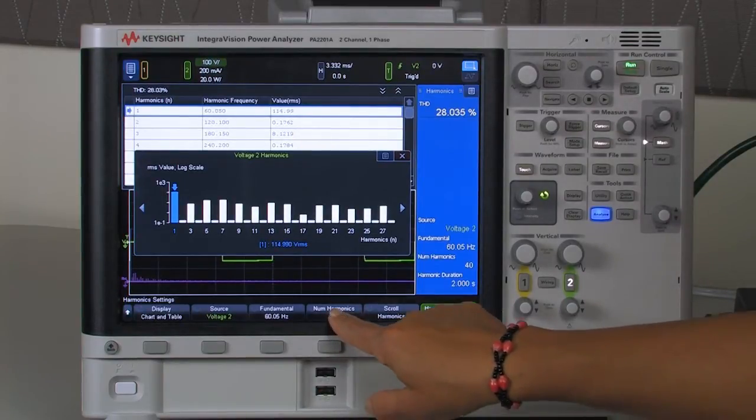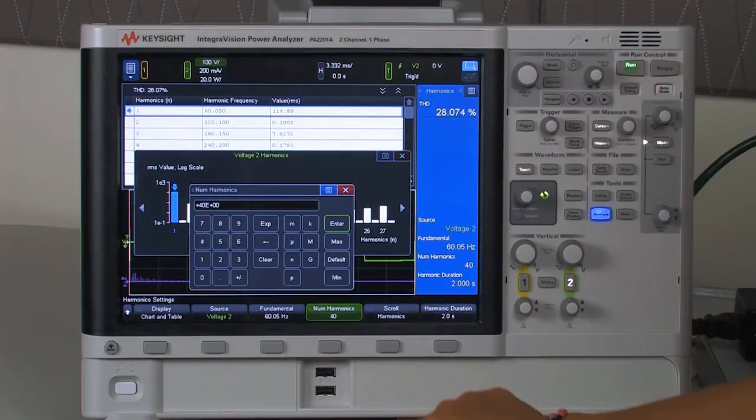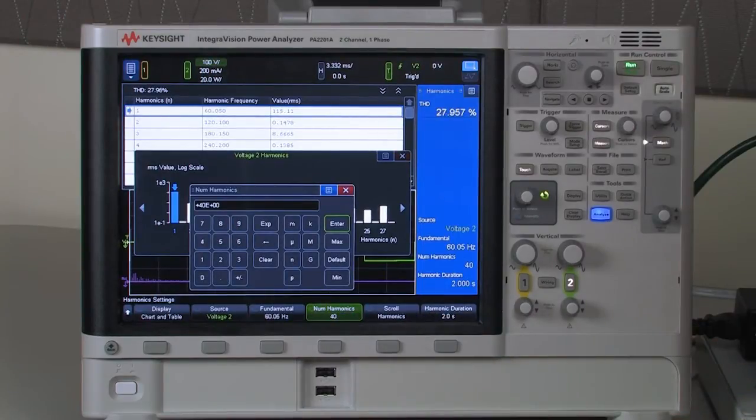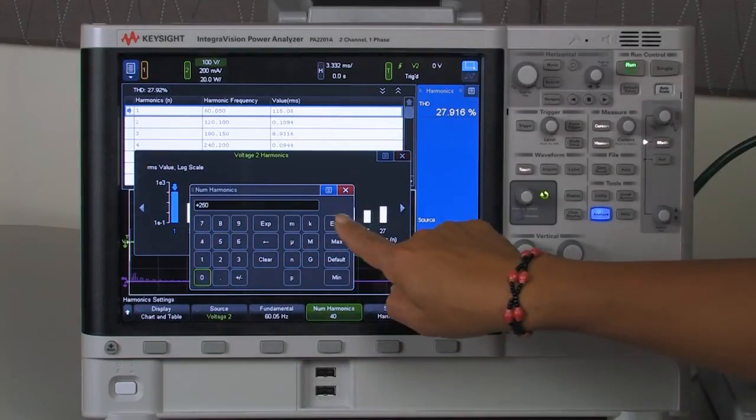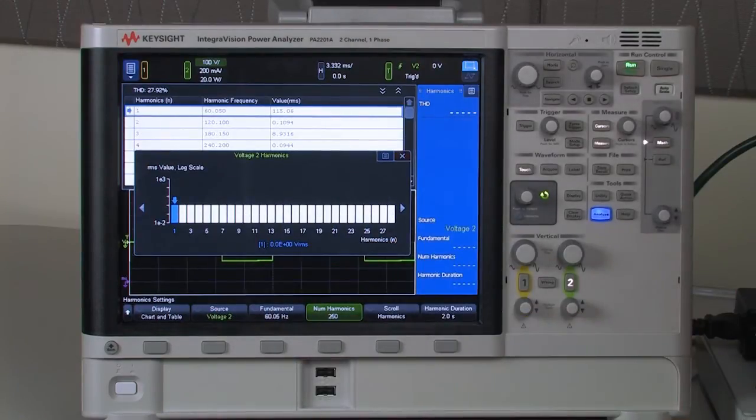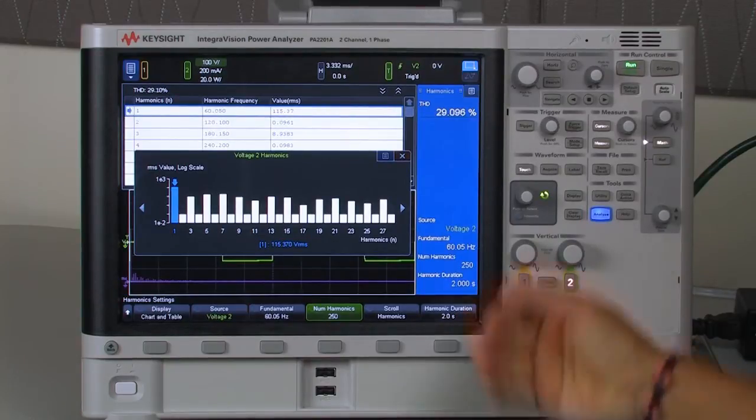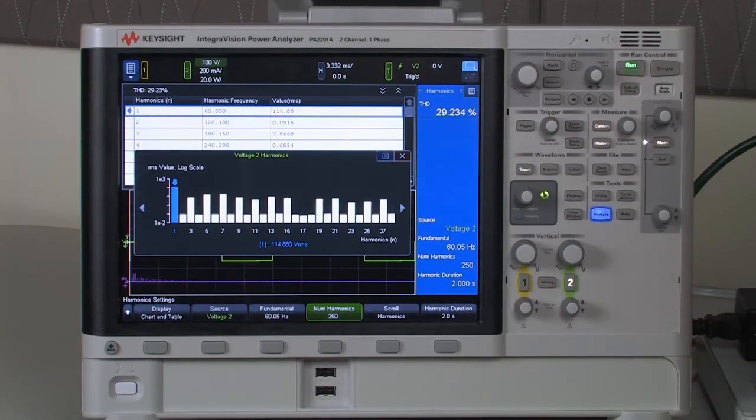Now as default it's set to 40 harmonics but I can go for line frequency as high as 250 which obviously will give me a more precise reading. Now it seems like I have about 29 percent of distortion.